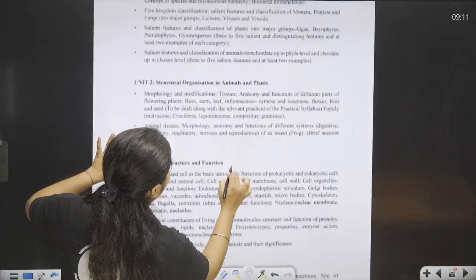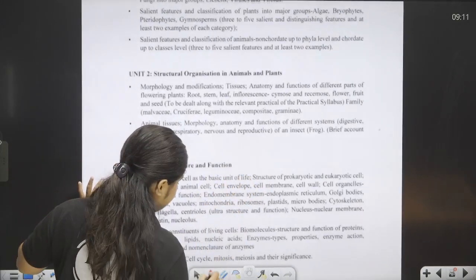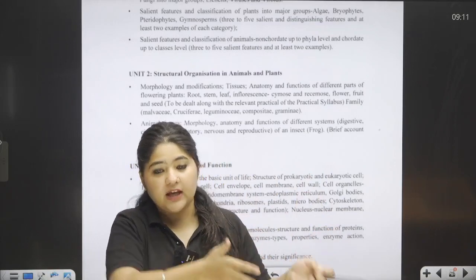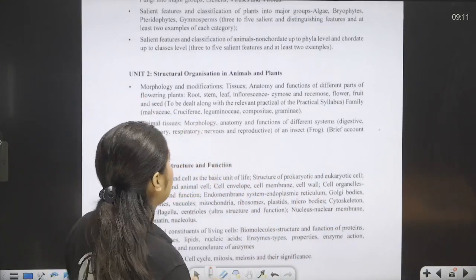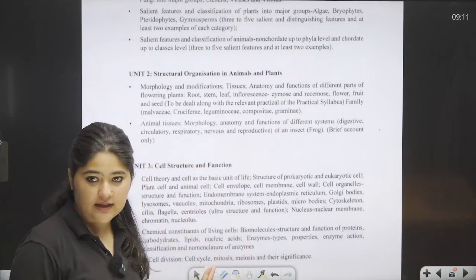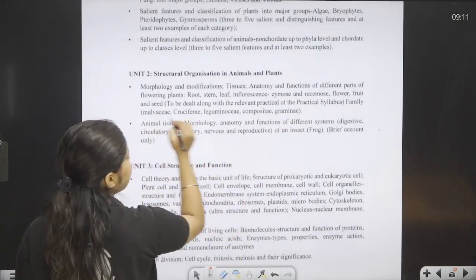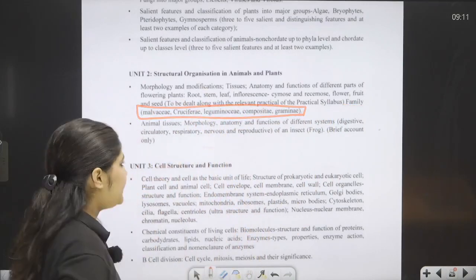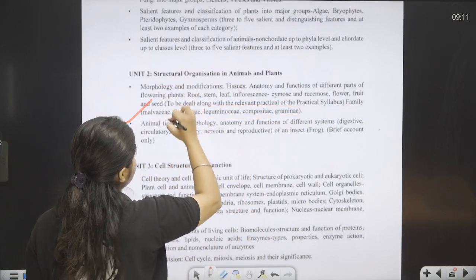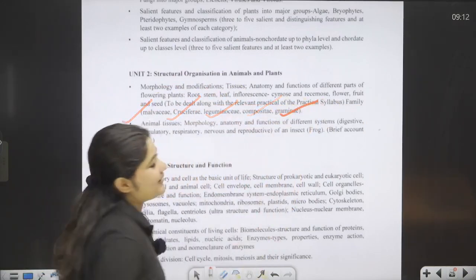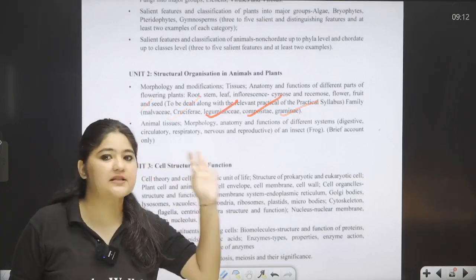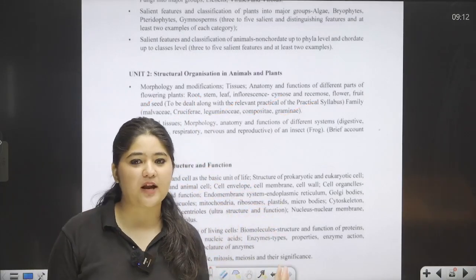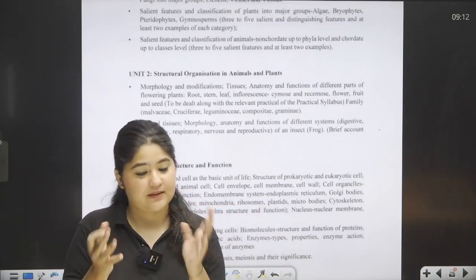In Anatomy of Flowering Plants, the starting portion — Tissues — will not come, and the last portion — Secondary Growth — will also not come. Only the internal structures will be covered here. But a very revolutionary change is in the Families. Until now we studied three families: Fabaceae, Solanaceae, and Liliaceae. Now the list of families given includes Malvaceae, Cruciferae, Leguminosae, Compositae, and Gramineae. Many students — especially Class 12 and droppers — have not studied these families yet and will now need to cover them. Class 11 students have time, but Class 12 and dropper students are going to be more troubled this time.